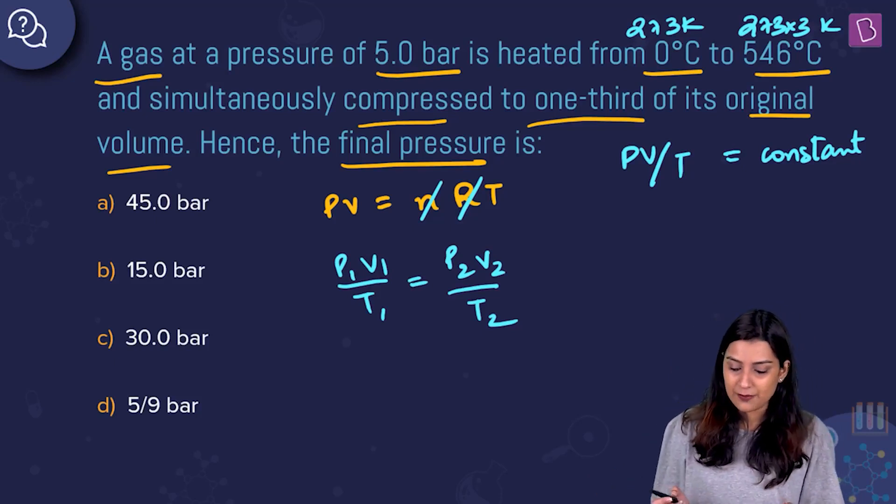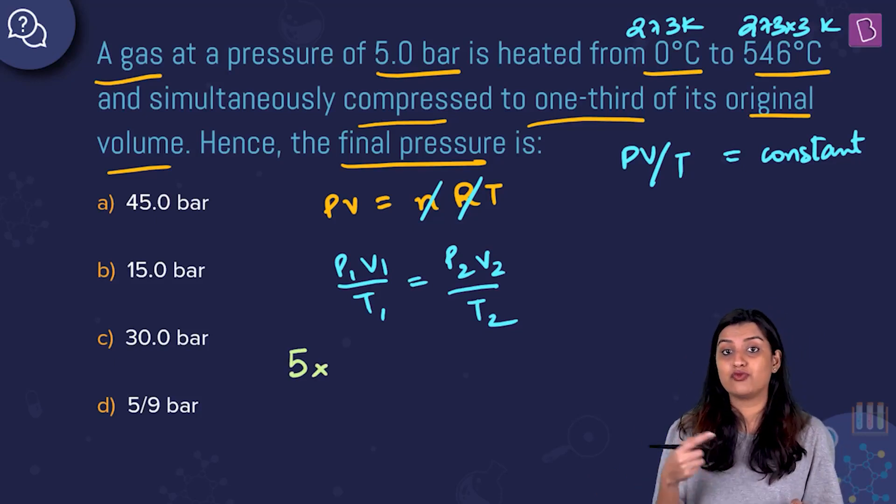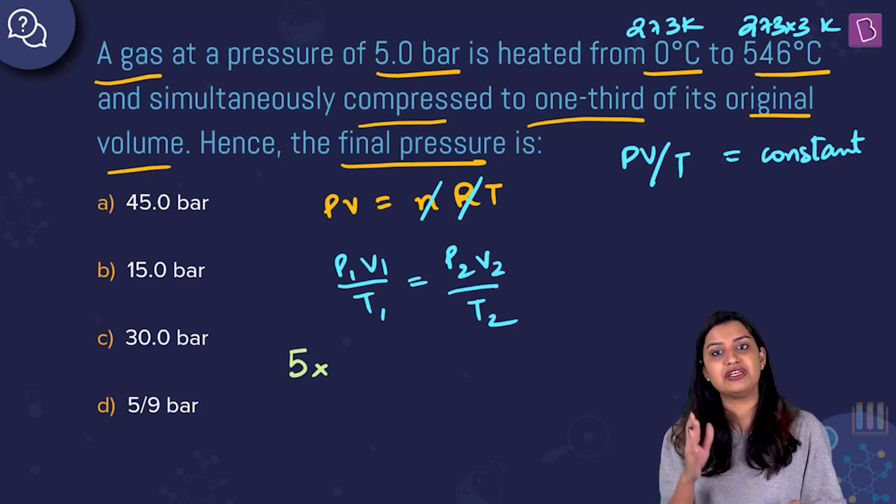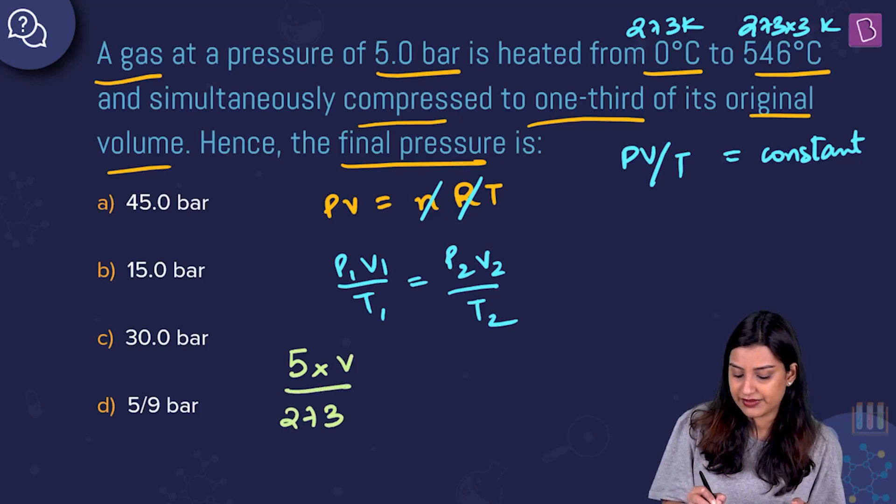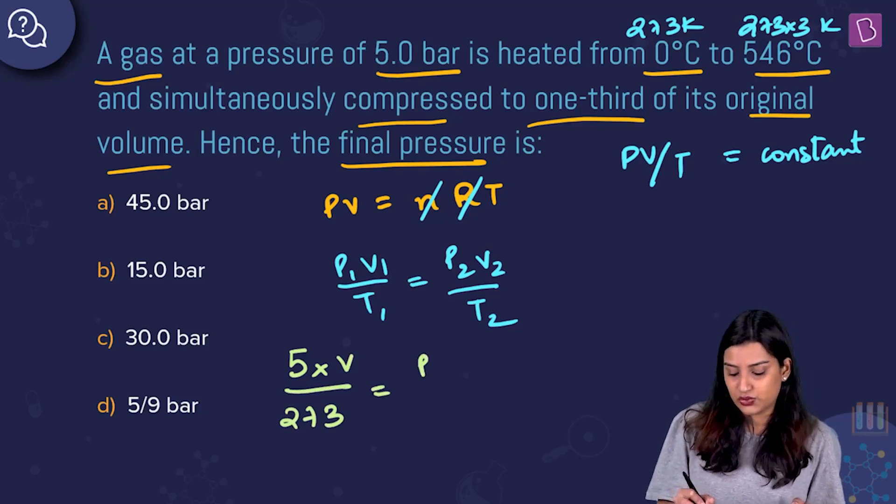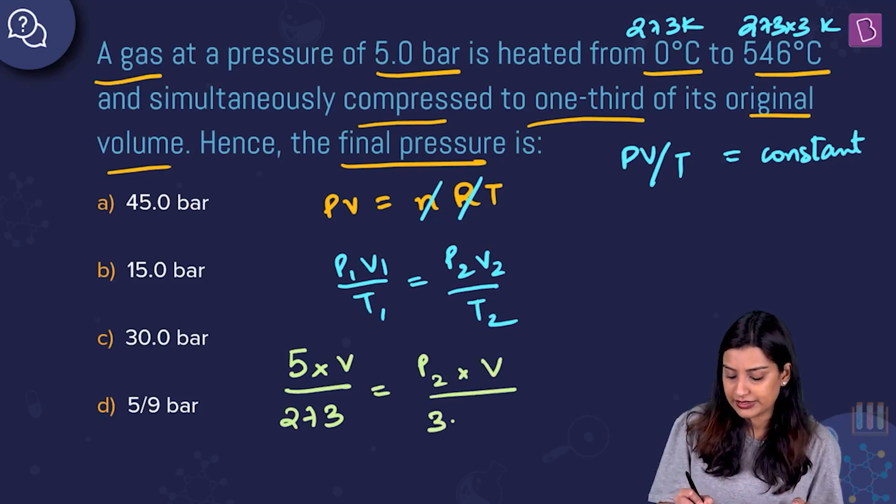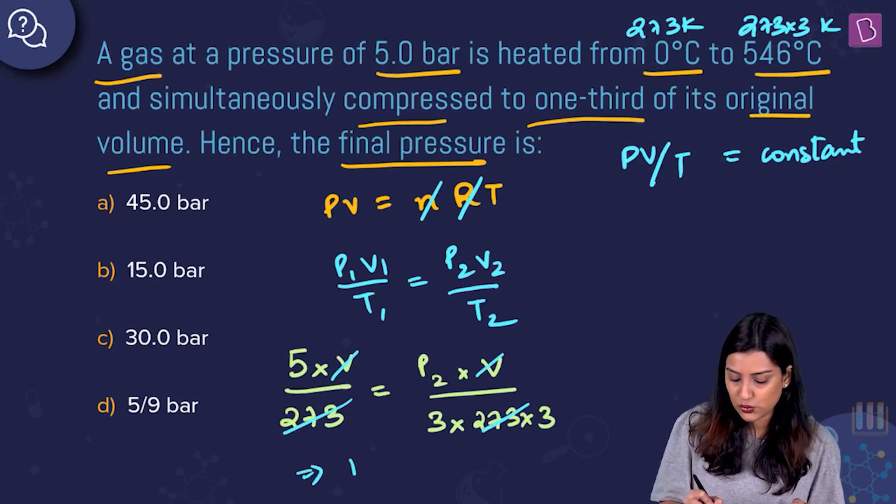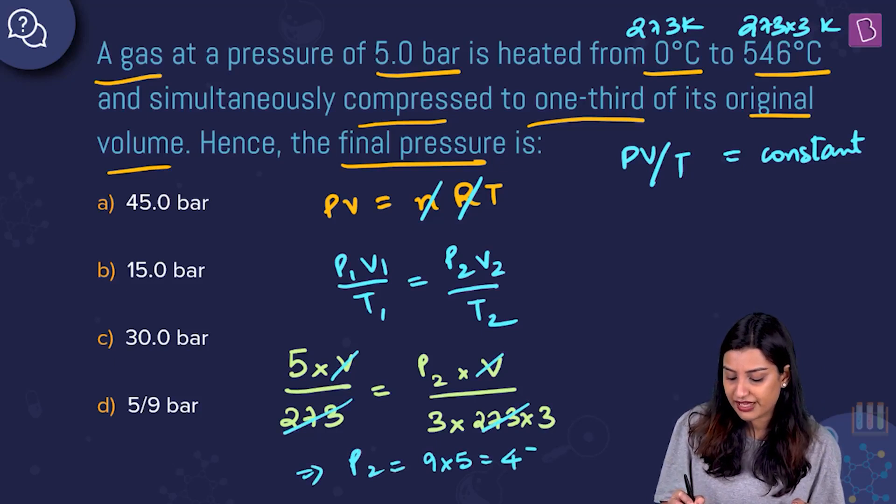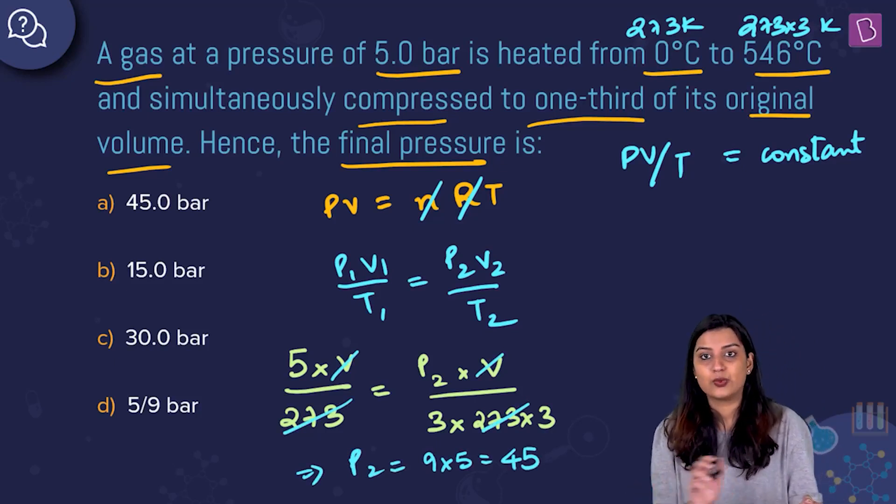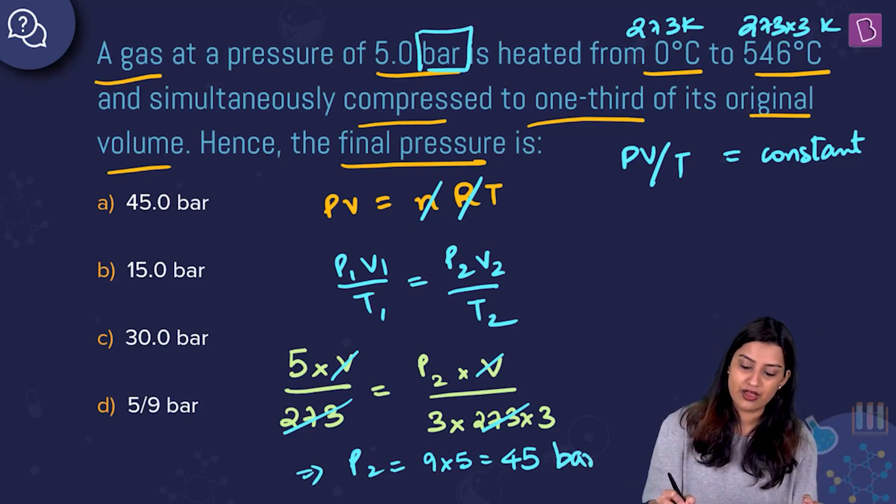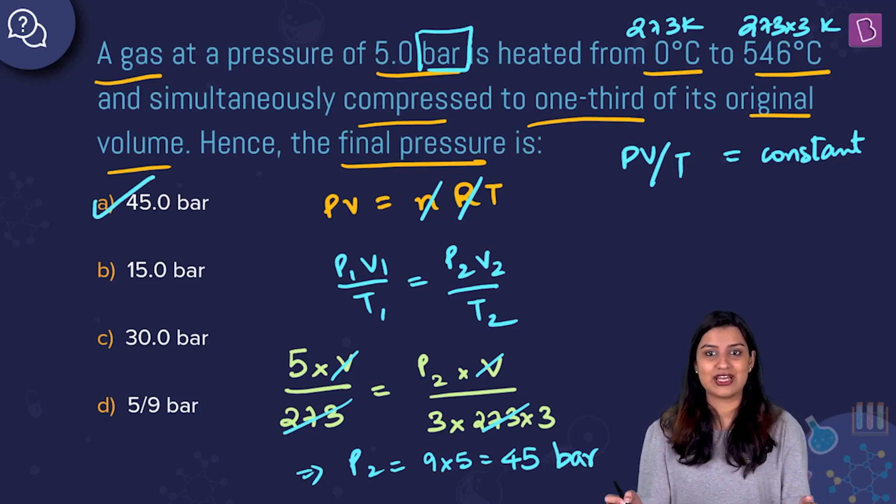Pressure initially was 5 bar, so 5 multiplied by volume. Initial volume was compressed to one third of its value, so I'm calling it V and V by 3. We have 5 times V divided by 273 Kelvin equals P2 times V by 3 divided by 273 times 3. When you cancel, V and V will get cancelled. P2 pressure is going to be 9 into 5, which is 45. The unit of pressure is what was originally given to us, that is bar. This is 45 bar, option A. 45 bar is the right answer.